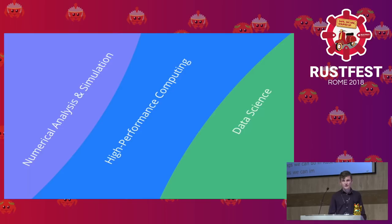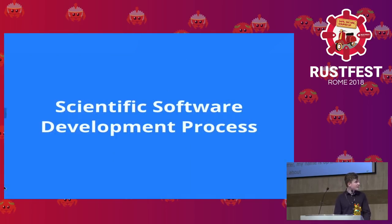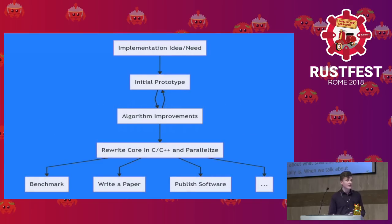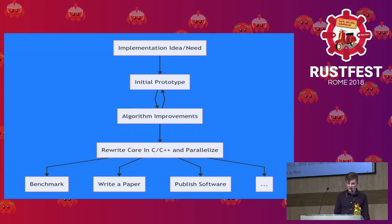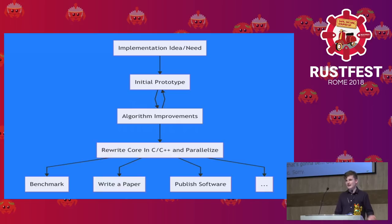If you look at how scientific software usually gets developed, it usually follows a certain process. It usually starts with an implementation need or an idea — a new algorithm, a calculation to run, or re-implementing something from a paper. From there, you might go to a higher-level language like Python, which is usually chosen first, or MATLAB, or similar languages, because it's easy to get started.